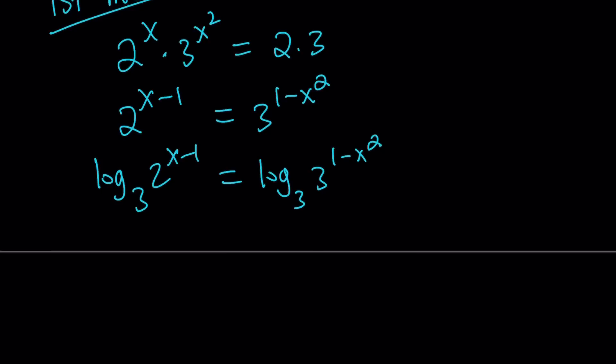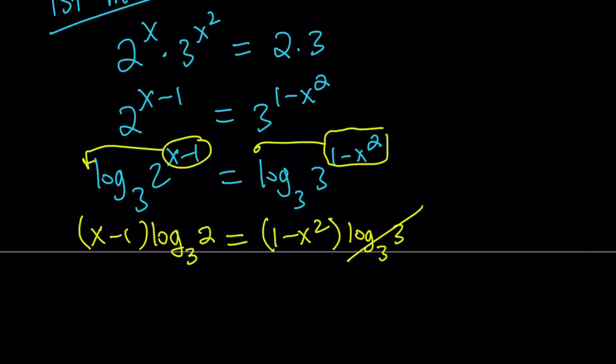When we log a power, we can move this to the front. We can do the same thing here. So it gives us (x-1) times log base 3 of 2 equals (1-x²) times log base 3 of 3. But that's equal to 1, so we can just write it as 1 minus x squared.